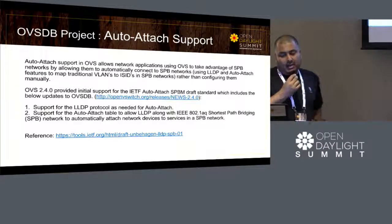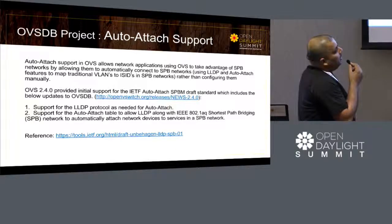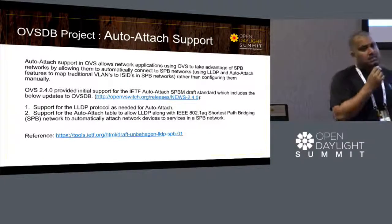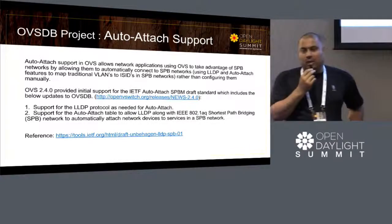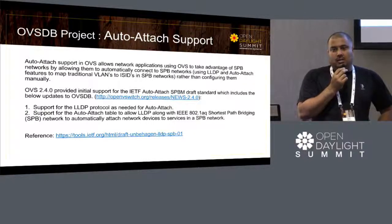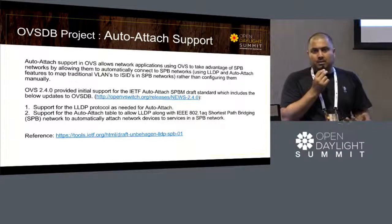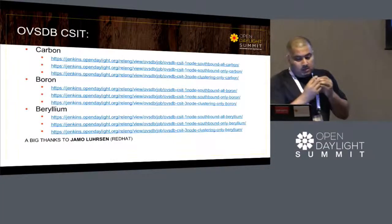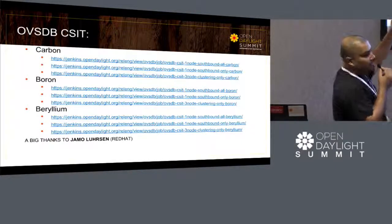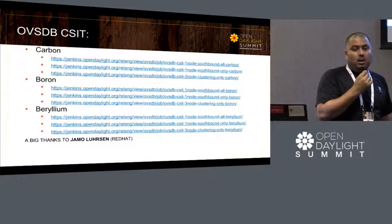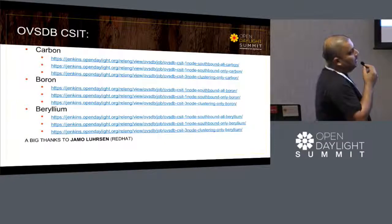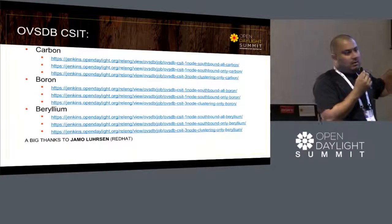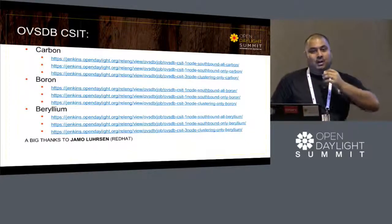Auto-attach table support was added for SPB (Shortest Path Bridging) networks, done by InnoSype. There is also support on the way for OVSDB. If anyone is interested in SPB, please contact Rashmi Pujar from InnoSype. For CSIT testing: single-node and cluster Jenkins tests are now stable and green. Thanks to Jamo from Red Hat who actively monitored tests and flagged breakages — his efforts are a key reason the tests are now stable and we're confident in what we're releasing.